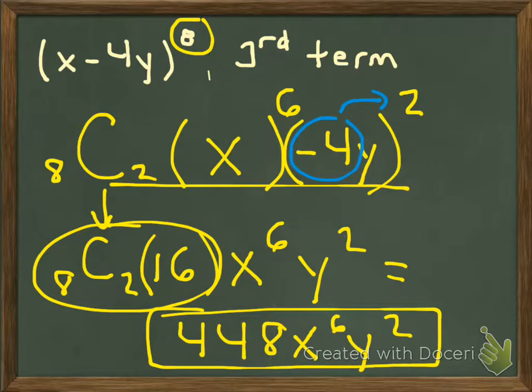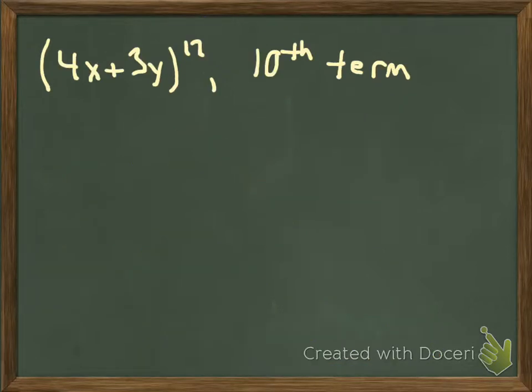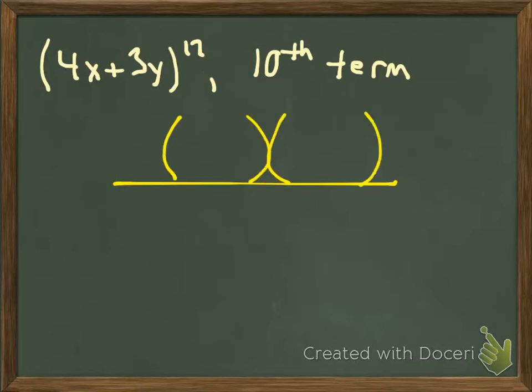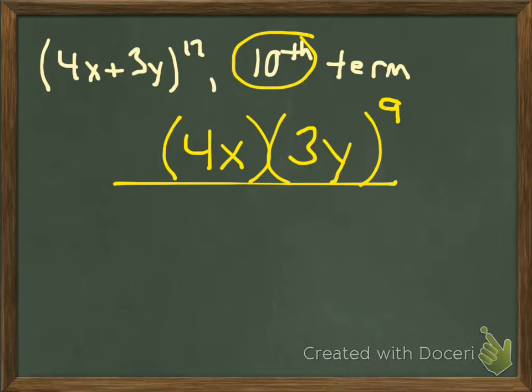Last example. 4x plus 3y to the twelfth. Find the tenth term. Here's my term. Two sets of parentheses. 4x being raised to powers, 3y being raised to powers. Since it is the tenth term, I know that this will get to nine on that term, because they start at zero. Once I know that's a nine, this is a three. And I will have 12 choose 9.